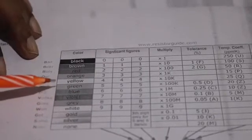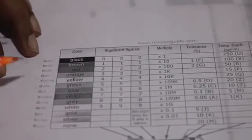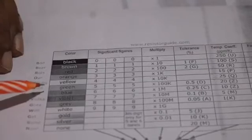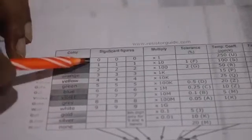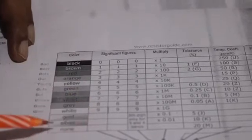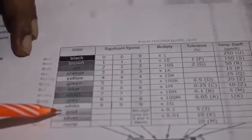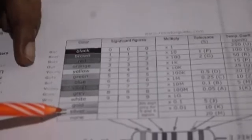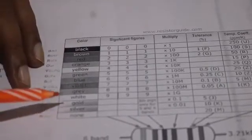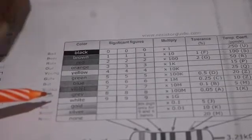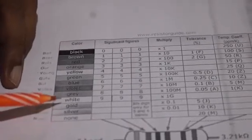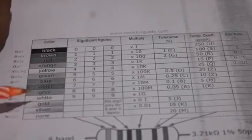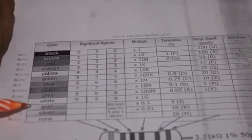Now let's look at the tolerance bands. The first band color is variable. For the tolerance band, gold corresponds to a 5% error, and silver corresponds to a 10% error. This gives the accuracy of the resistance value.